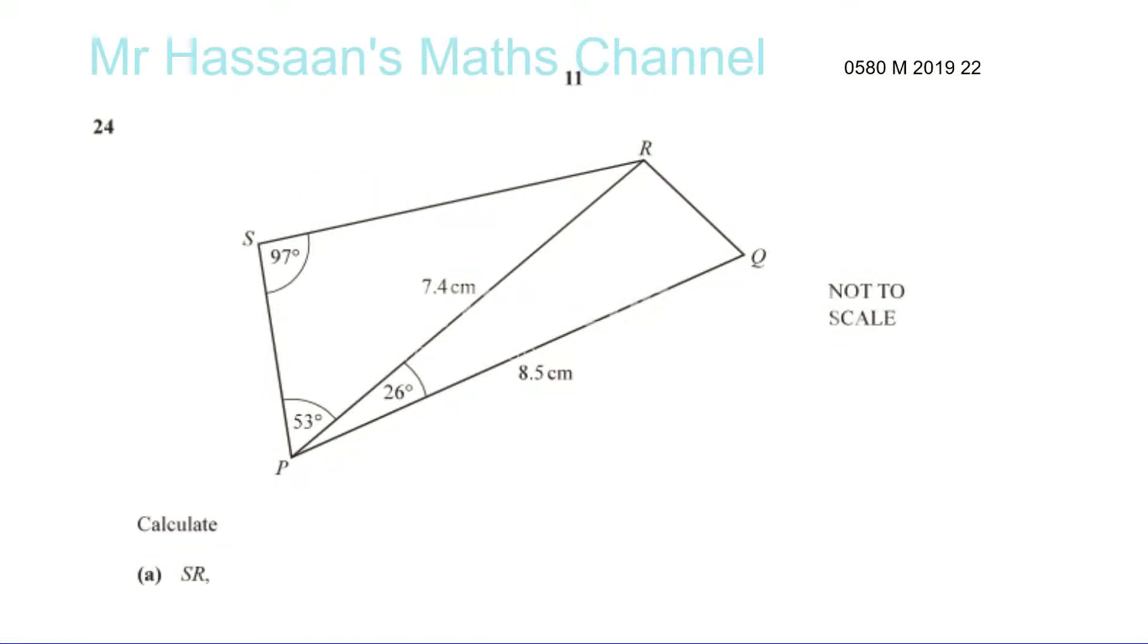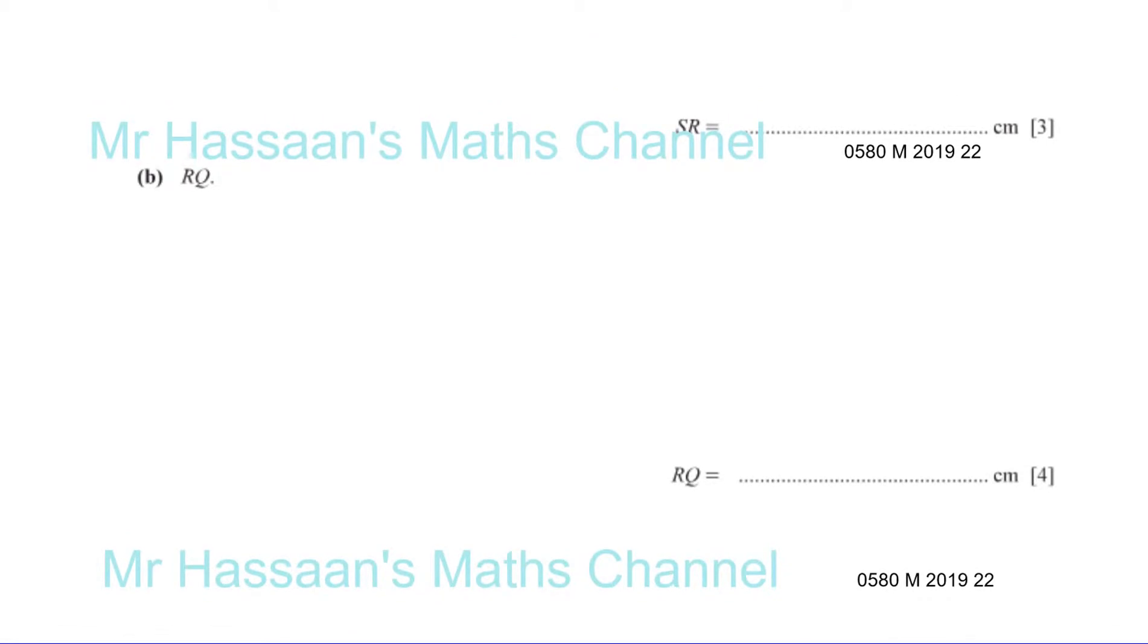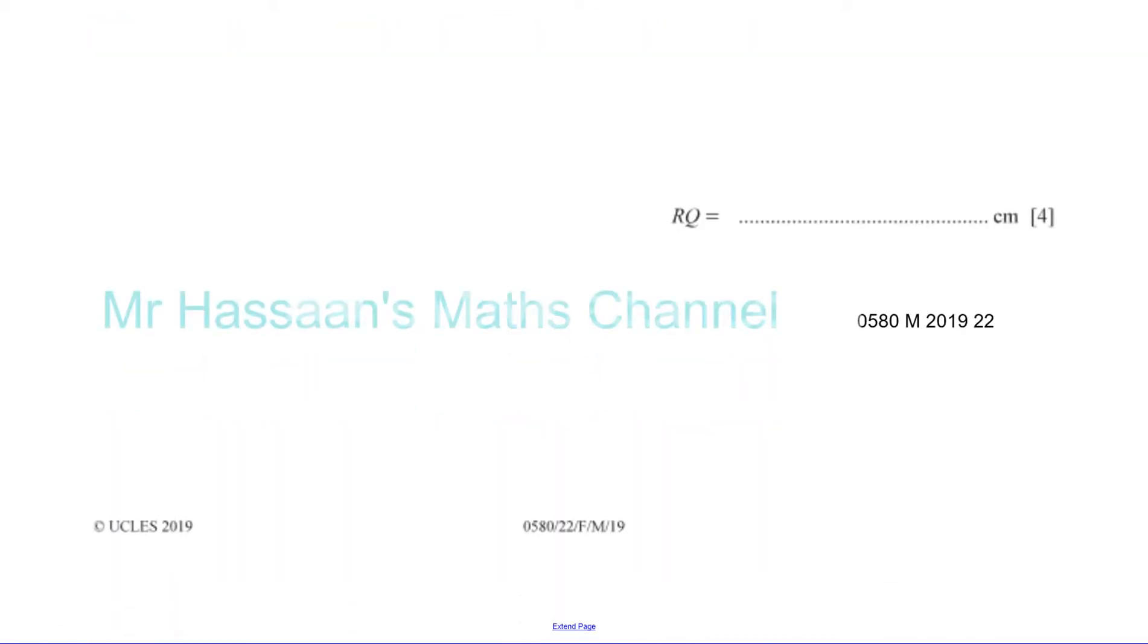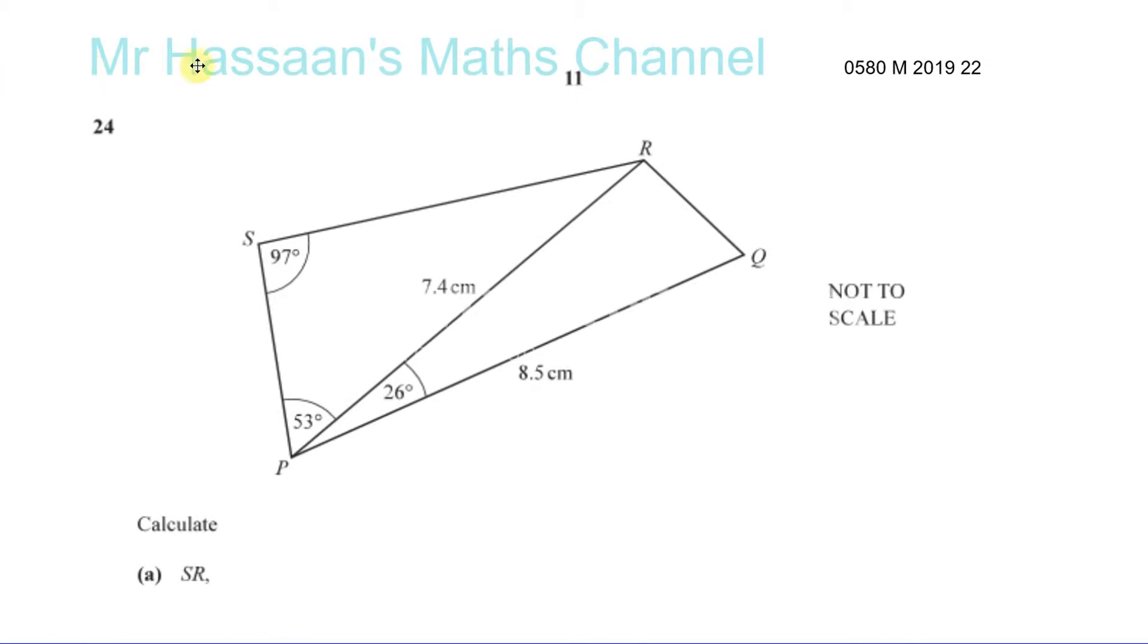Okay, now for question number 24 from February March 2019. You wish it was May June right now, wouldn't you? No, it's February March 2019, Paper 2.2.